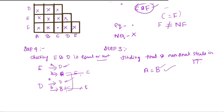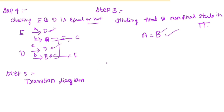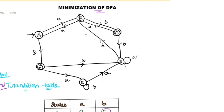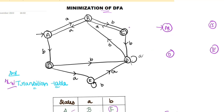So this is the concept — this is the Table Filling Method. Step 5 is the Transition Diagram for the minimized DFA. We have the same path. AB is equal, CF is equal. So we have the same path. D and E are also considered — D is equal, E is equal.